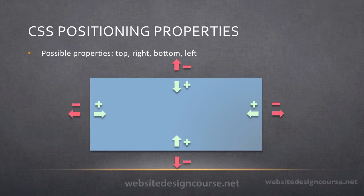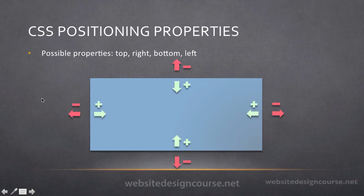If we use negative values, it's just the opposite. So if I say top negative 20, it's actually going to move up, whereas top positive 20 would push down. And left negative 20 would move it to the left, while left positive 20 would move it to the right. So you need to remember the positive and negative values of each of these properties.